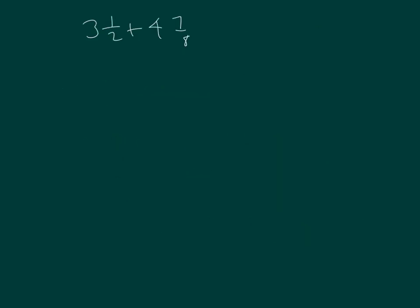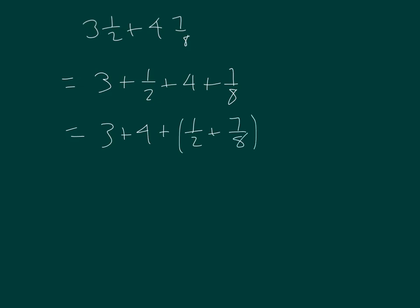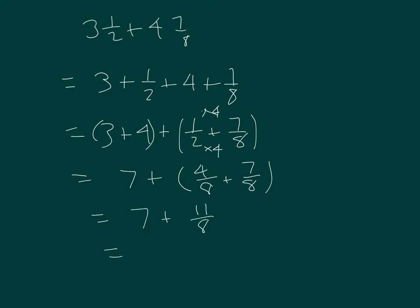Here I have 3 and 1 half plus 4 and 7 eighths. That's 3 plus 4 plus 1 half plus 7 eighths. 1 half equals 4 eighths, so we get 7 plus 4 eighths plus 7 eighths, which equals 7 plus 11 eighths. Recognizing that 11 eighths can be rewritten as 1 and 3 eighths, we add it with 7 to get 8 and 3 eighths.